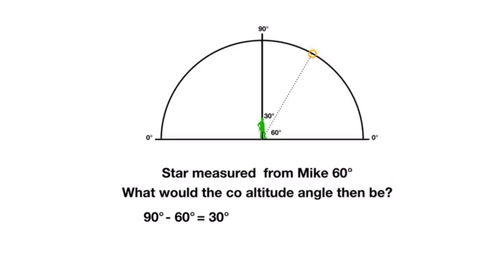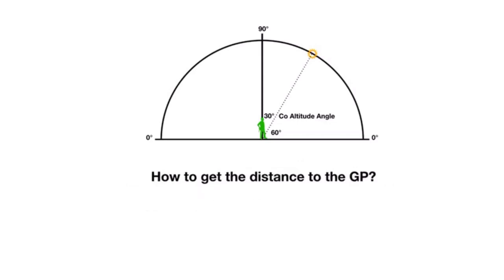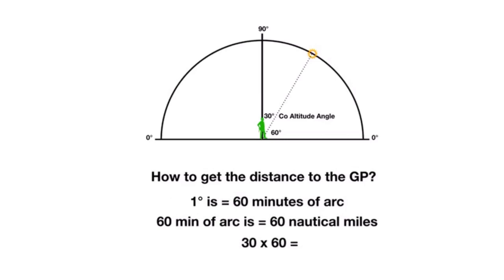So now we know the co-altitude angle measured would be 30 degrees. I repeat, I am not doing any corrections for this. This is simply just to show how to get the GP. Now, that's the co-altitude angle we all know. Let's get the distance. How do we get the distance to the GP? 1 degree is 60 minutes of arc. Every degree would represent 60 minutes of arc. So every 60 minutes of arc represents 60 nautical miles. This would be the distance on the elevation angle surface, which is a horizontal plane. So we take the 30 degrees and we times it by the 60 minutes of arc, which would give us 1,800 nautical miles. That would be the distance from Mike to the GP of star 1.